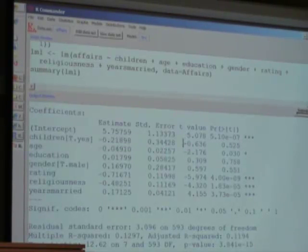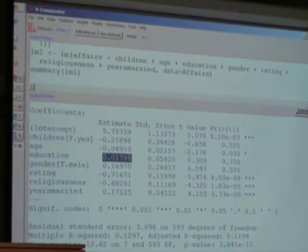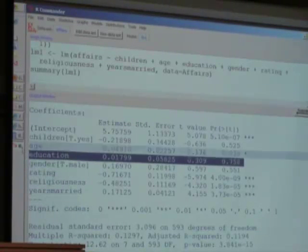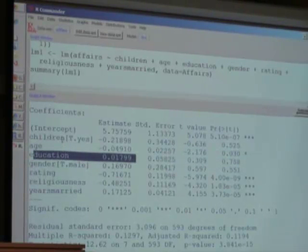However, the t-value is very small and the p-value is greater than 0.05. This is not a statistically significant coefficient. The higher the education, the more likely that you would have more affairs, but this is statistically insignificant. Both these variables suggest that they are not statistically different from zero. So having kids or having more education does not necessarily mean that you would have more or less affairs.